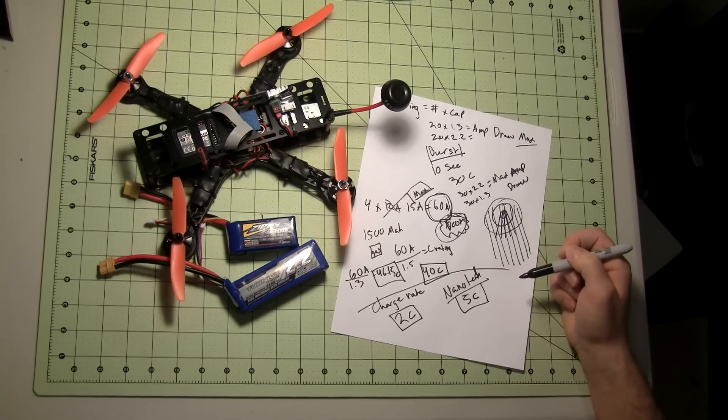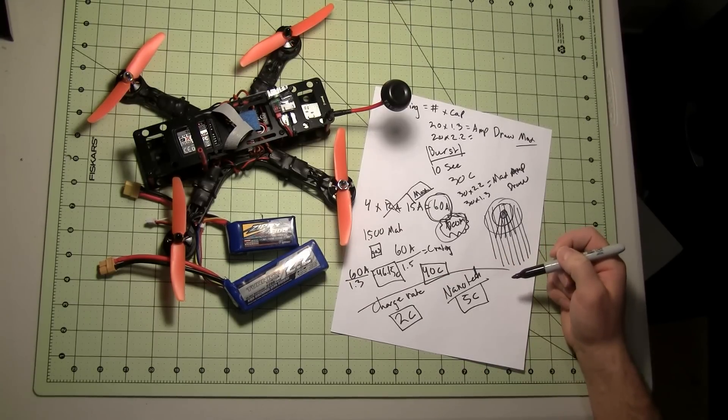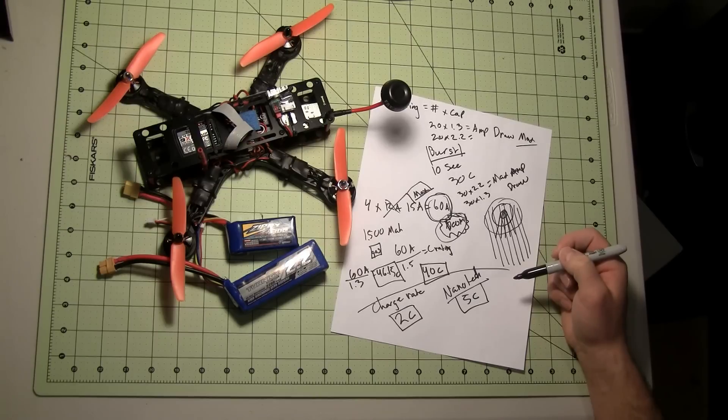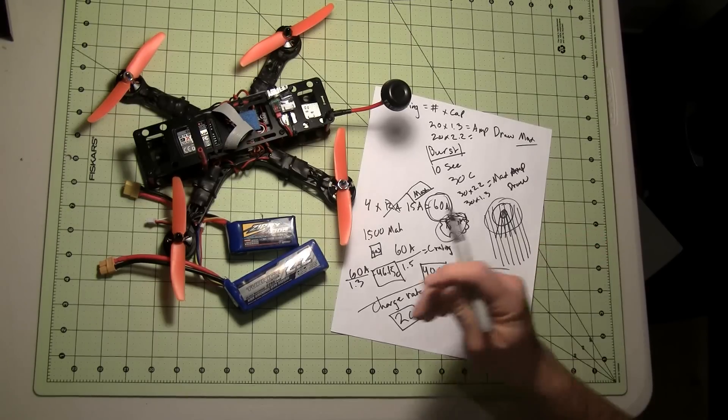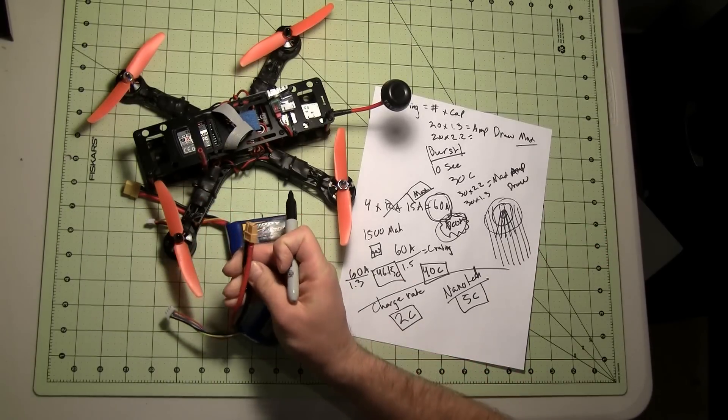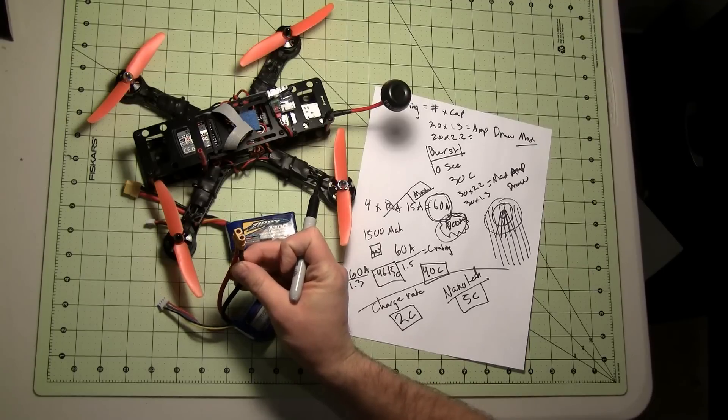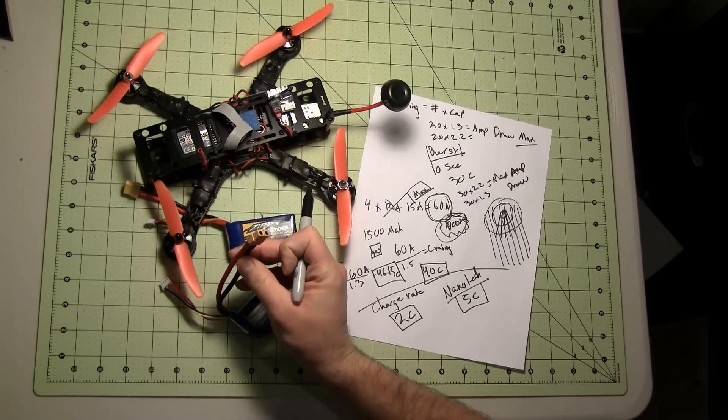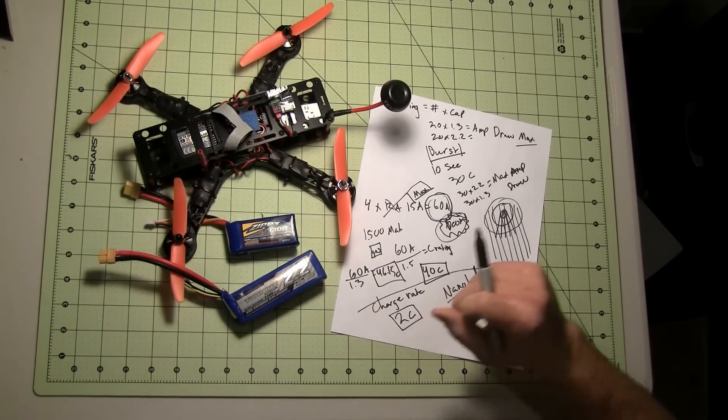And again, the Nanotechs are rated closer to 5C charge rating. That's just the charge rate. It lets you get things charged pretty quickly. I would definitely check out FlightTest for their soldering tips if you do need to solder on your own connectors. A lot of the HobbyKing items do come with the XT60, which are kind of the standard now.